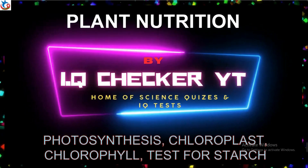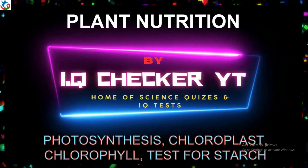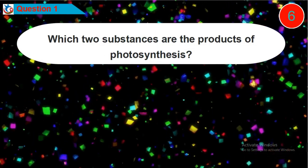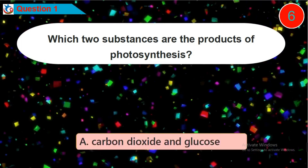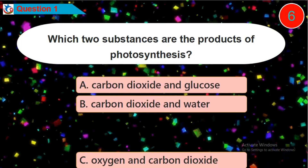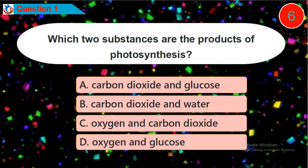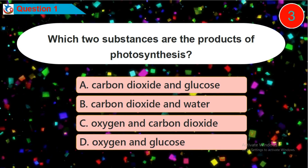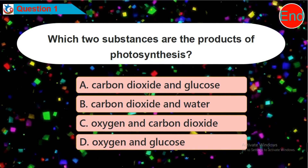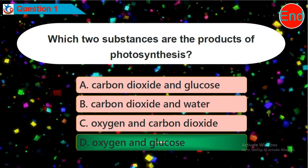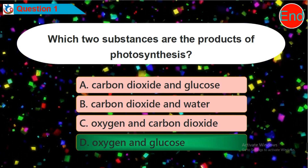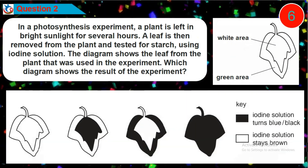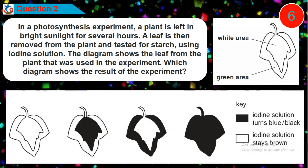Plant nutrition by IQ Checker YT. Question one: which two substances are the products of photosynthesis? Is it option A, B, C, or D? Question two: in a photosynthesis experiment, a plant is left in bright sunlight for several hours.